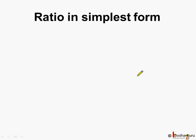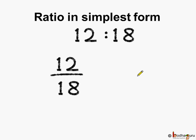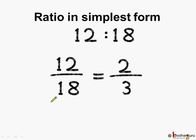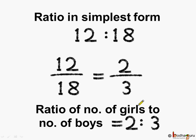If we see the simplest form of both the ratios, then 12 is to 18, it is equal to 12 by 18. Let us reduce it. If we divide both the numerator and denominator by 6, we get 2 by 3, as 6 twos are 12 and 6 threes are 18. So this ratio of 12 is to 18 in the simplest form becomes 2 is to 3. We can also say the ratio of number of girls to the number of boys is equal to 2 is to 3.